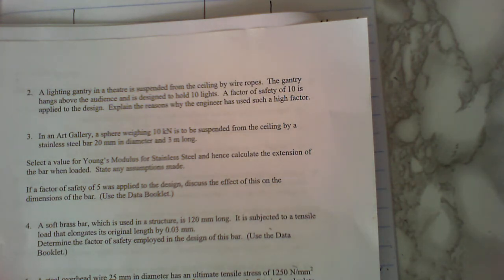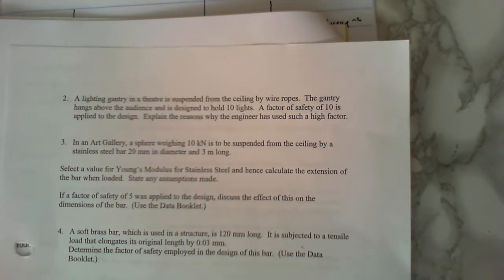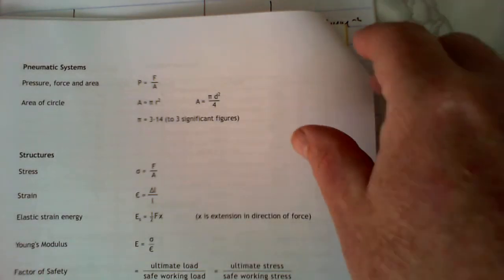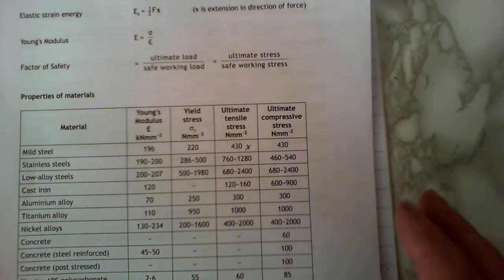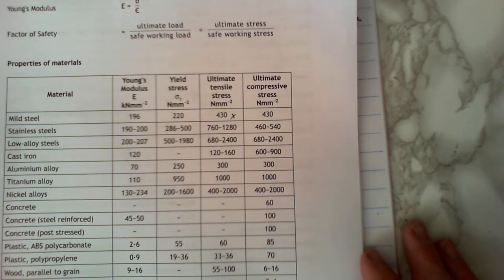So do that one first of all, you'll notice that one's got nothing to do with factor of safety yet. First job, selecting a value for Young's. So I've got my table here, my table from the data book which I said last time you should probably print off.